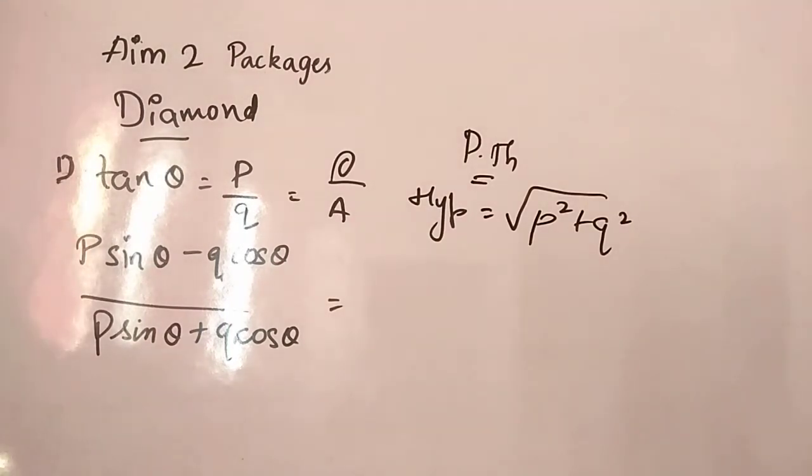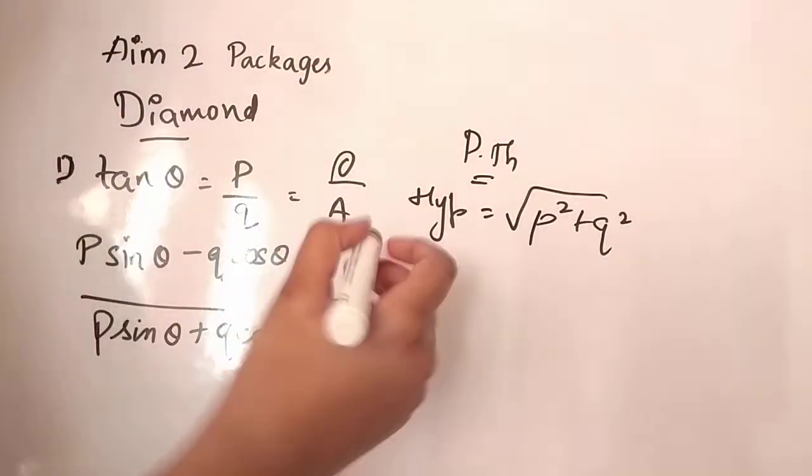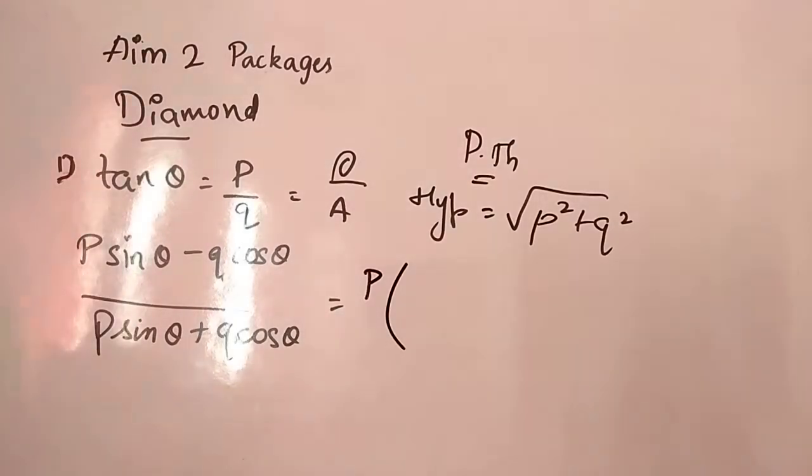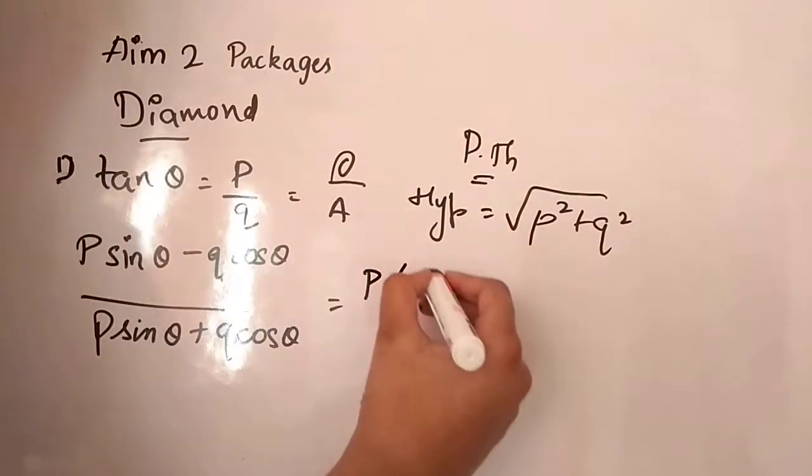Fine, so with that, I will do with sin theta formula. Sin theta is opposite by hypotenuse. So first, P into, P we will take to a side, common term, right? So that's right. Now, P, why I wrote this P?